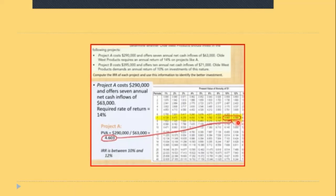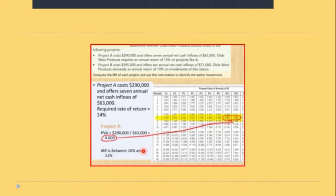The tables correspond to the project costing $290,000 offering seven annual net cash flows. You look down to the row for seven years, then go across until you find the figure 4.603. It falls somewhere between 10 and 12 percent — possibly 11 percent — but there is no column for 11 percent in the tables. You then take this rate and compare it with the discount rate that would cause the net present value to be equal to zero.